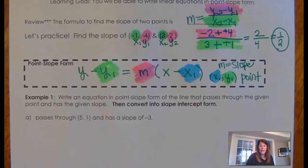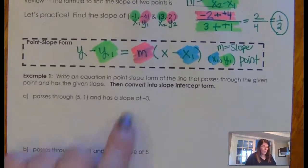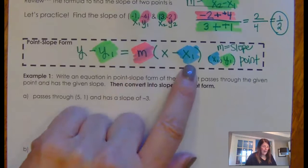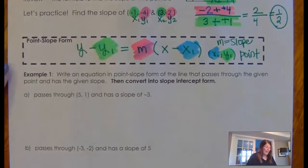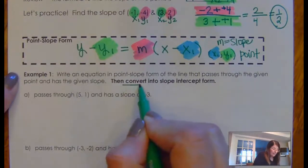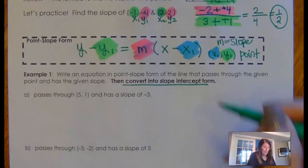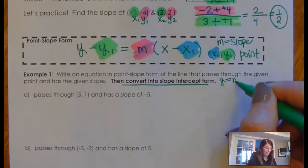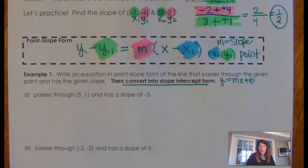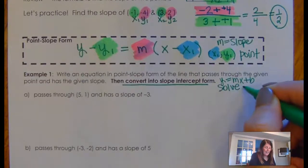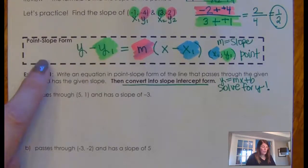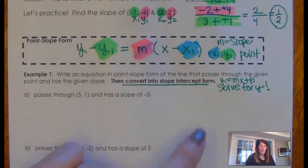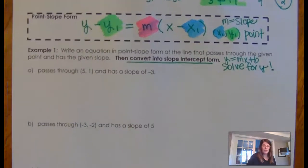So basically, to write equations in point slope form, you need an M, you need an X1, and you need a Y1. And then we're just going to put it all together. Now, at the end of that, we are going to convert it into slope intercept form. Remember, what was slope intercept form? Y equals M, X plus B. And yesterday, we talked about how converting into slope intercept form is a fancy way of saying, just take that equation and solve it for Y. Okay? So I'm going to write it in this way, and then I'm going to solve it for Y.